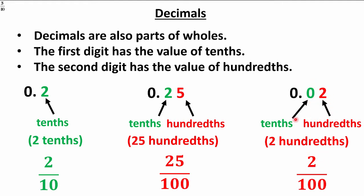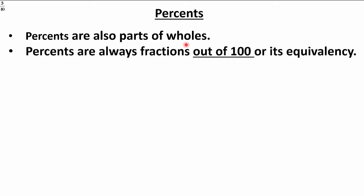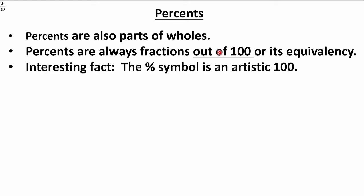Equivalent formats — it's not too hard. Now what are percents? Percents are parts of wholes, just like decimals and fractions, and they're always written out of a hundred or an equivalent format. The percent symbol is a kind of code for the number one hundred: that slash is a one, and the two zeros on each side — it just means a hundred. So if you see twenty percent, that's twenty out of a hundred.